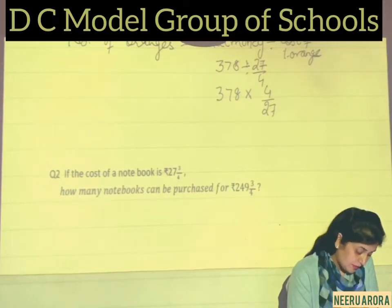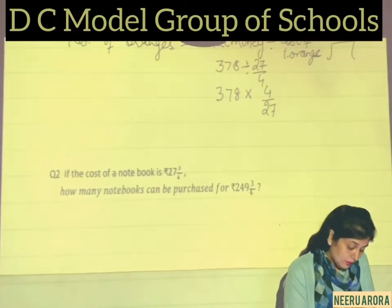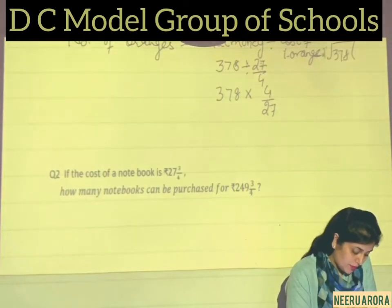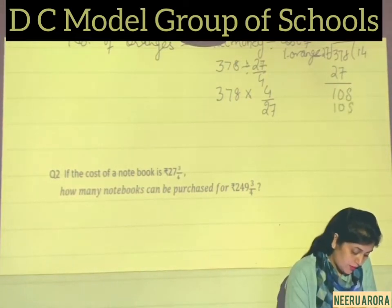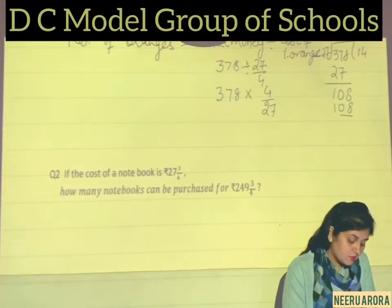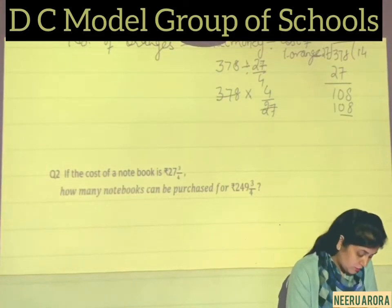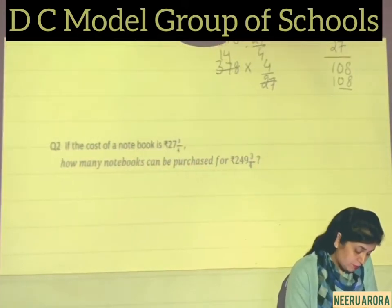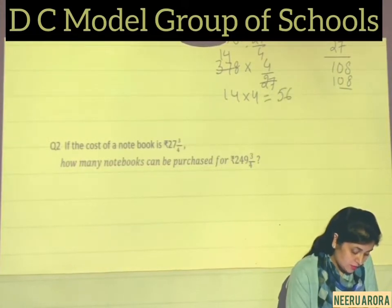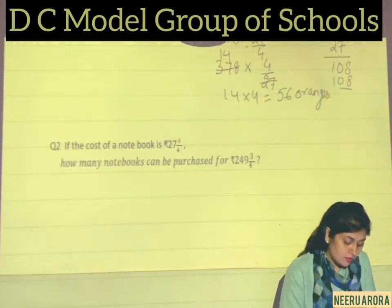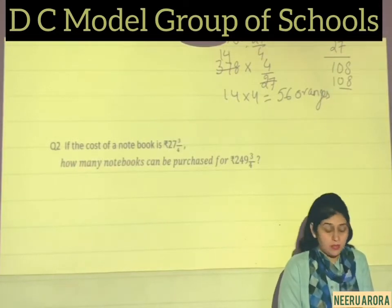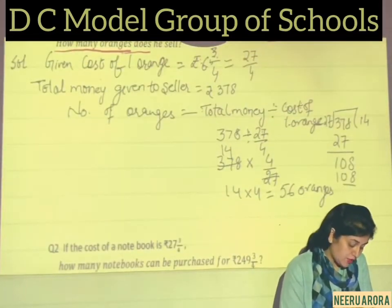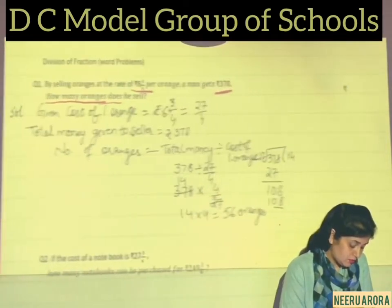Now 378 is divisible by 27. Let's check: 378 ÷ 27 = 14. So we have 14 × 4, numerator multiplied by numerator, which gives 56. So in Rs. 378, 56 oranges can be purchased — he will sell 56 oranges. This is our first solution.